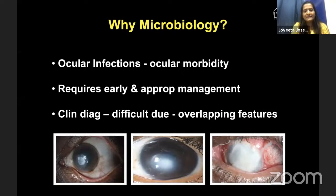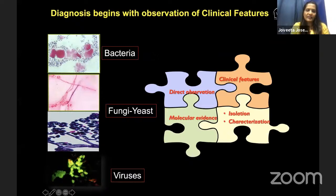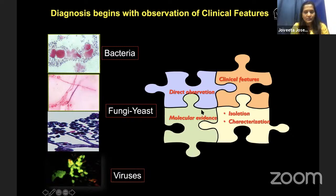Why microbiology? Ocular infections can lead to severe ocular morbidity, and early and appropriate management will prevent loss of vision. Diagnosing them based on clinical diagnosis alone is often difficult because of overlapping or confusing features, so microbiology remains the gold standard for diagnosing all these infections. Any infection is caused primarily by bacteria, fungi, or a virus — sometimes parasites. It is the combination of direct observation of these organisms with clinical features, isolation in culture, and nowadays molecular evidence in the form of PCR — as seen in COVID diagnosis — that is becoming increasingly important.